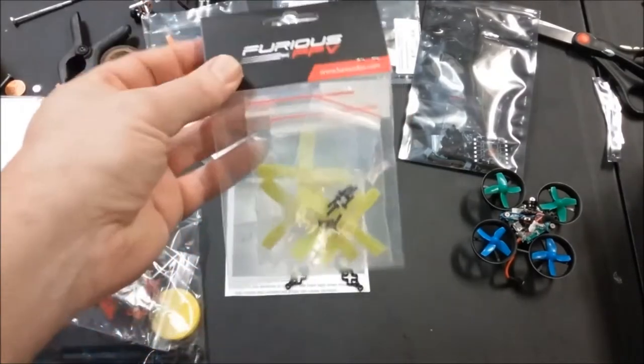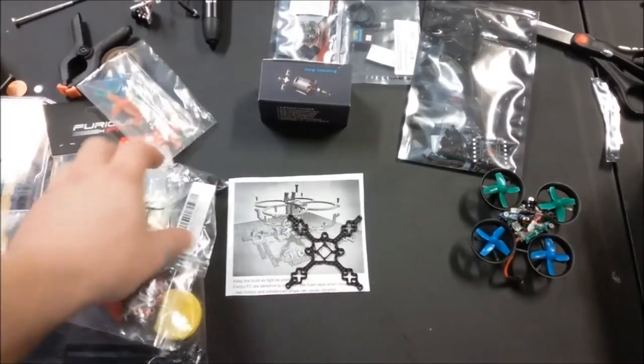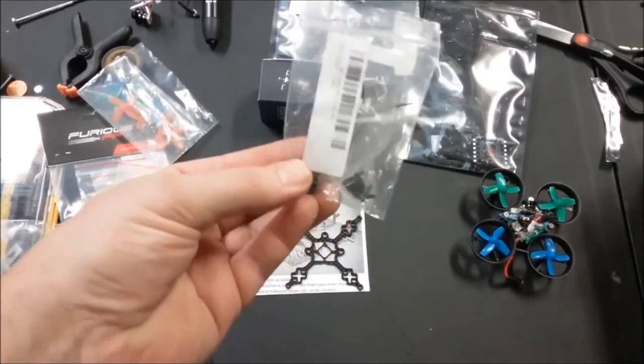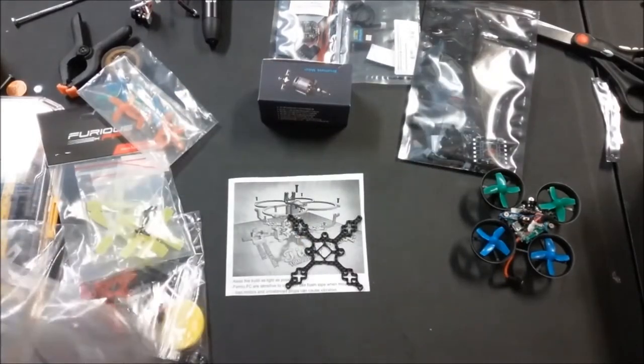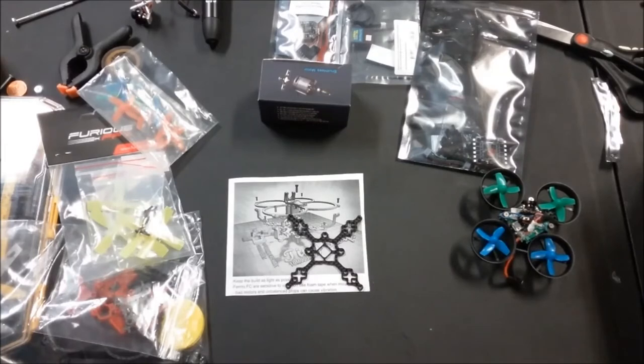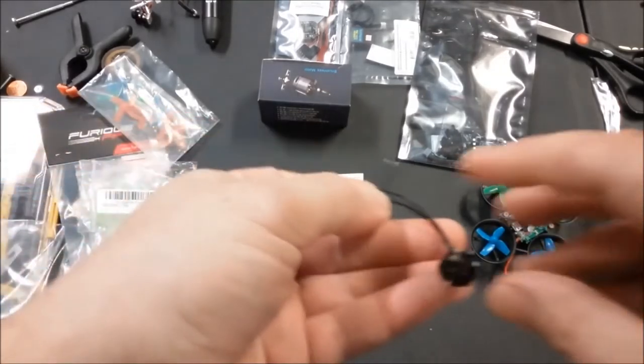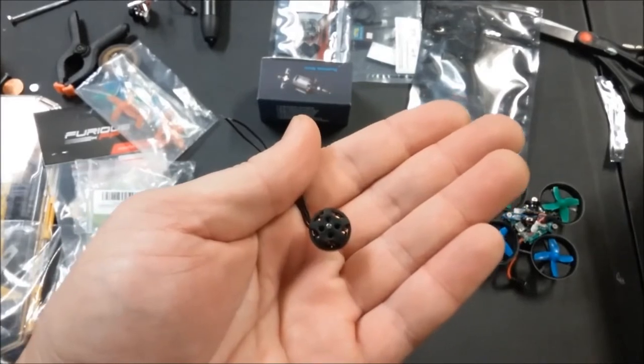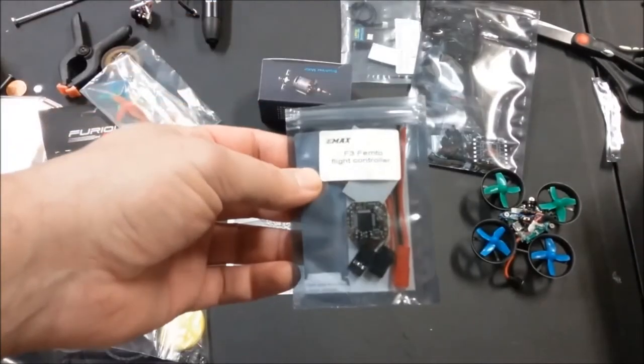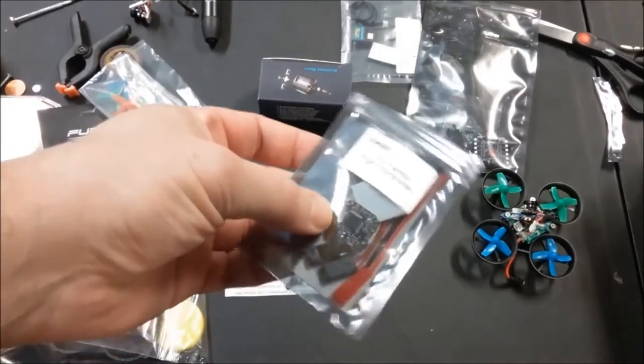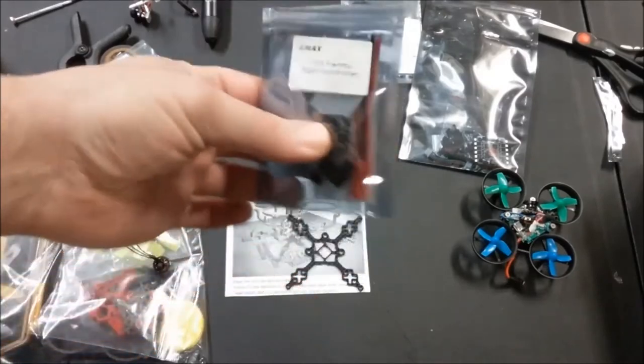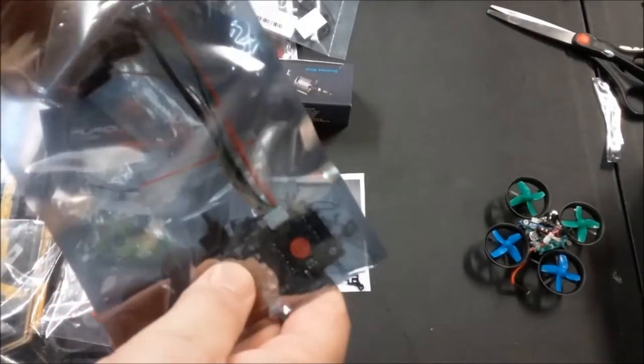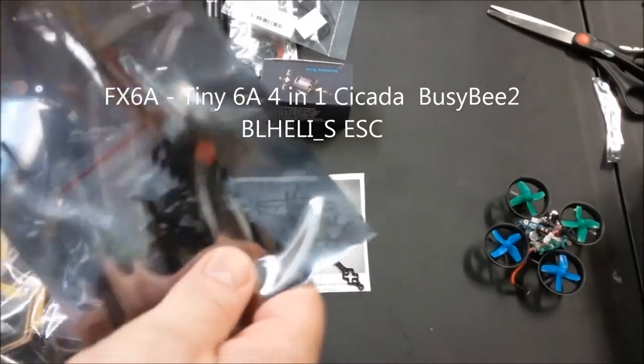For props I'm going to go with the Furious FPV 2035s which will be trimmed down. Those were recommended with the build. For motors I went with the Flex RC 1103 10,000 KV. One thing I liked about these instead of the RaceStar is they have mounting holes for the props. The FEM2 F3 flight controller from Emax, very small board. This is a 2s build by the way. And then also for the ESC I went with the Flex RC FX A6 in one ESC.